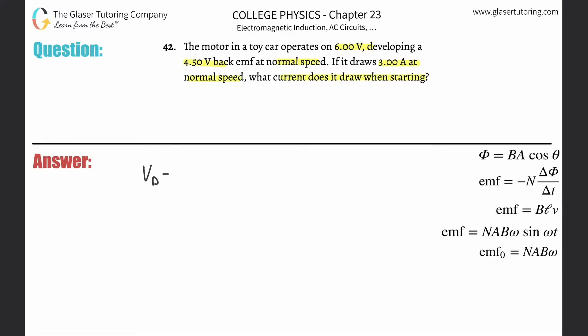We're going to use that the driving voltage minus the back voltage will be equal to the operating current multiplied by the driving voltage divided by the current upon first starting. Now what we need to do is solve this for what current does it draw when first starting.